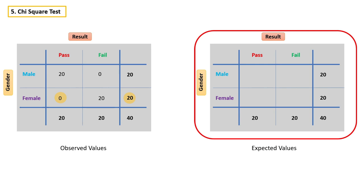Obviously the values will be evenly distributed. For example, if there are 20 male students, out of 20, 10 of them should get a pass mark and 10 of them should get a fail mark. Similarly, if there are 20 female students, 10 of them should get a pass mark as well as 10 of them should get a fail mark. Then only can we say there is no relationship between gender and result. If the values are evenly distributed, both male and female students are equally getting pass as well as fail marks — so there is no relationship between gender and result.